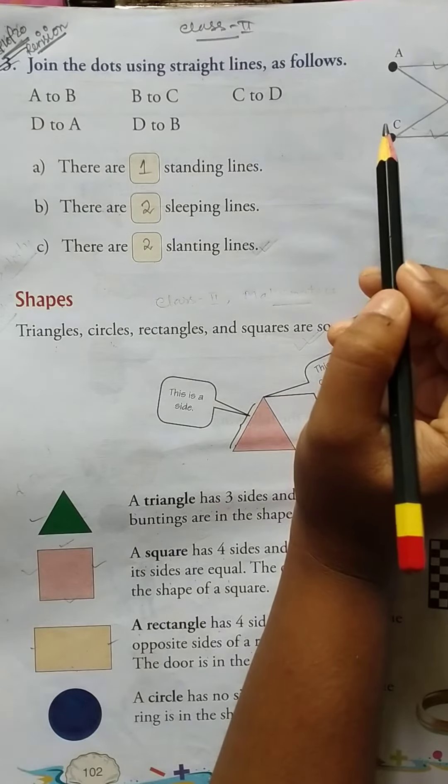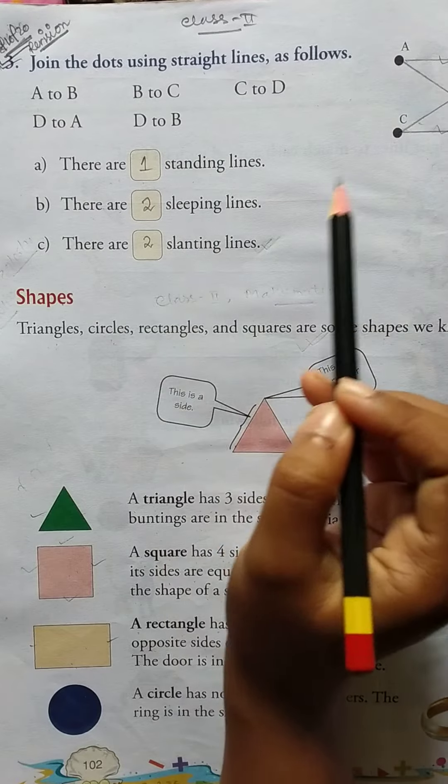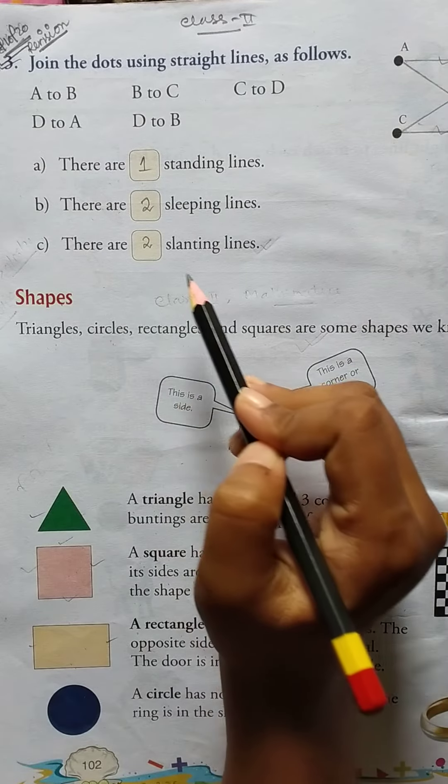And D to B. There are 4 standing lines, there are 2 sleeping lines, there are 2 slanting lines.